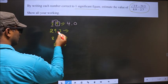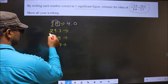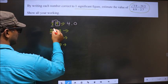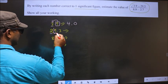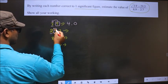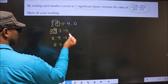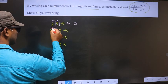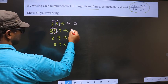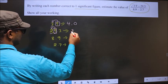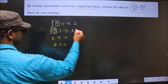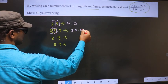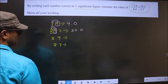Now, for this number, this is the first significant number. This is the second significant number, which is 9. Greater than 5, so we should add 1 to this, making it 3. And in the rest of the places, you put 0.